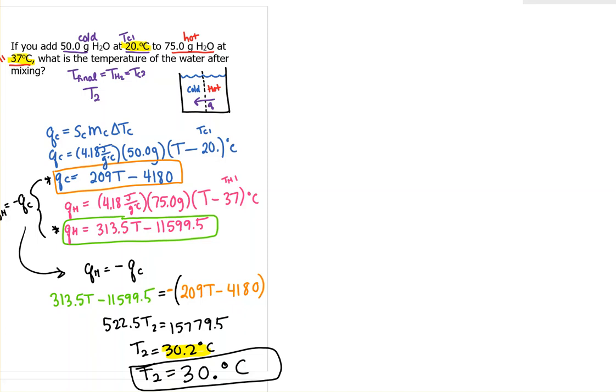There's another way to solve this using a weighted average, and that's fine if you know how to do it. Also, you can check if your answer makes sense. We're mixing water at 20 degrees and water at 37 degrees, so we expect the final temperature between those. If you came out with a temperature hotter than 37 degrees, that wouldn't make sense. That's another check you can do.